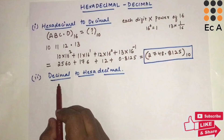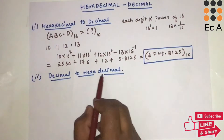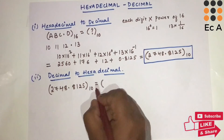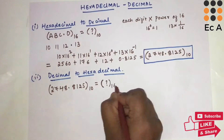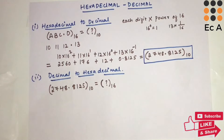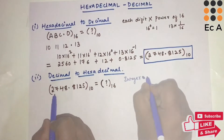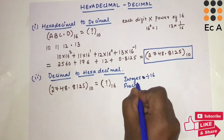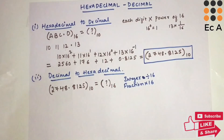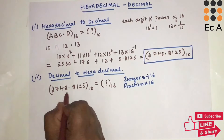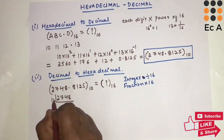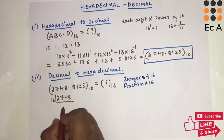Now let us see the conversion from decimal to hexadecimal. We will take the same decimal number and convert it back to the equivalent hexadecimal number. To convert from decimal to hexadecimal, the integer part of the number should be divided by 16, and the fractional part should be multiplied by 16. Let us take the integer part 2748 and divide it by 16.